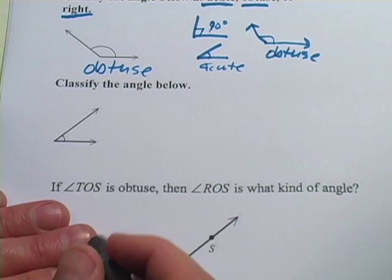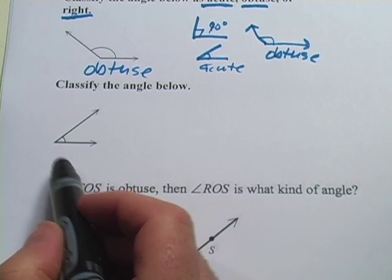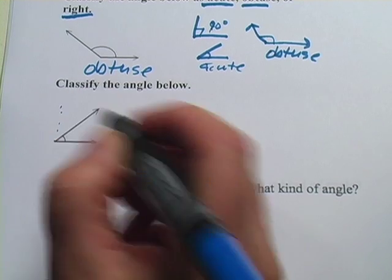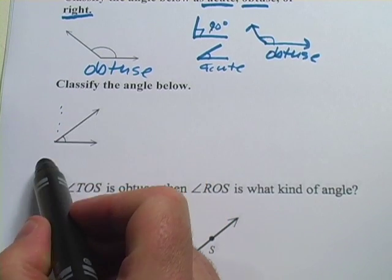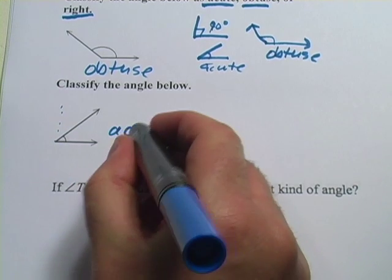Let's look at the next angle below here. This one says classify the angle below, and we have this. If this were a 90-degree angle, it would be coming straight up here like that. It's sharper than that. The angle is smaller. It's less than 90 degrees, so this will be acute.